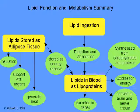The second part of our lecture is about lipid disorders. Lipids are digested and absorbed by the intestine and reach the circulation in the form of lipoproteins. Lipoproteins are either oxidized for energy or stored as energy reserves in the adipose tissue. The importance of adipose tissue includes insulation, support of vital organs, generation of heat, and storage of energy.